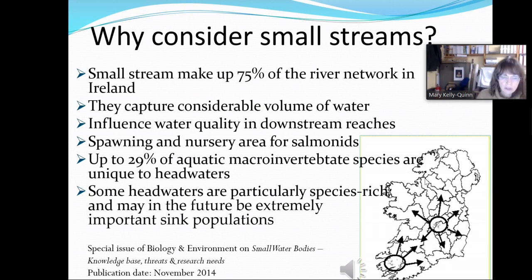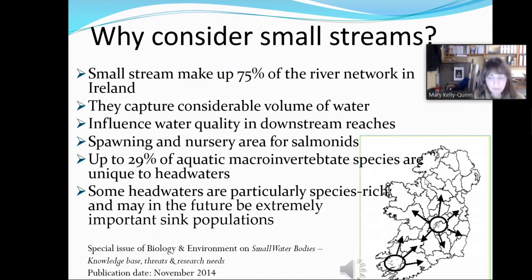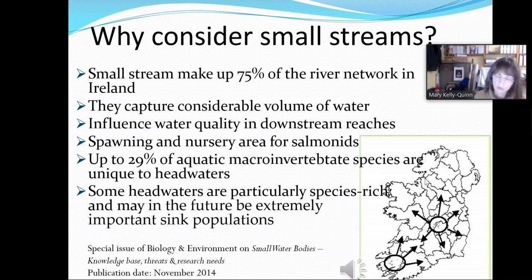Small water bodies need more attention even though they're not required to be monitored under the Water Framework Directive if their catchment is below 10 square kilometers. They're important for tackling and pinpointing pollution problems and targeting appropriate measures. The Small Stream Risk Score index is based on five groups of invertebrates — a little like the Q value but with a reduced number of taxa. What I'm covering today is how you calculate it; you'll learn the taxa during face-to-face practical training.